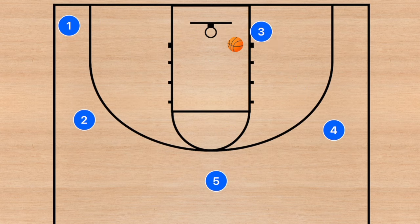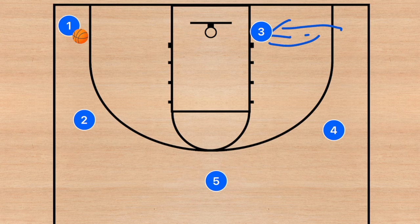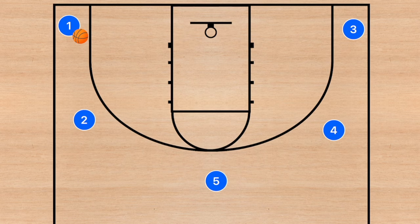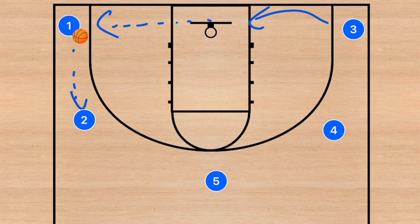If player three passes to player one, or really any of the other players, just like five-out pass-and-cut, when he cuts to the rim he needs to fill out to the same spot he came from. If he came from the corner, he fills back to the corner. Now — drive, kick swing. We drove, we kicked the ball out, and now we can also swing the ball.